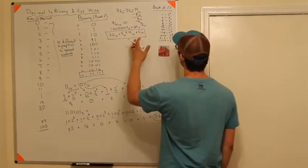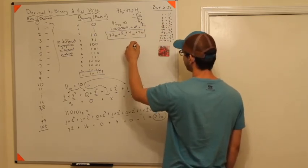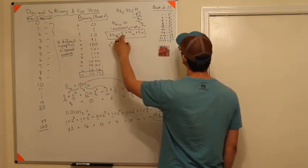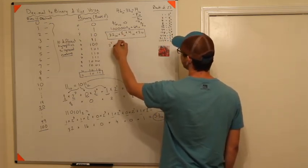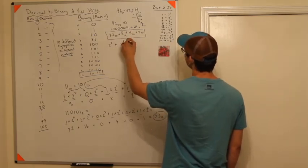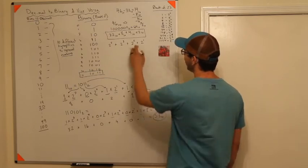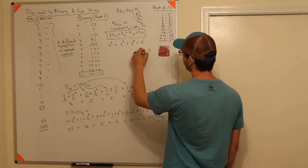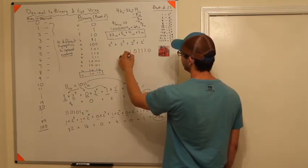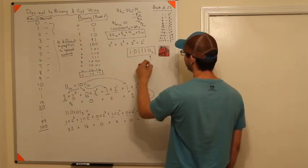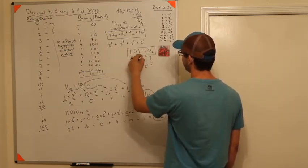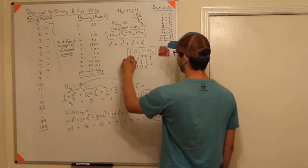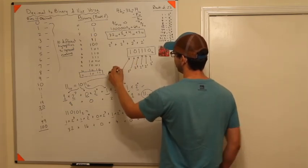Now I write down all the powers: 2 to the 5, plus 2 to the 3, plus 2 squared, plus 2 to the 1. Those become your binary digits. So reading from bit position 5 down to 0: 1 at position 5, 0 at position 4, 1 at position 3, 1 at position 2, 1 at position 1, 0 at position 0. So 46 base 10 is 101110 base 2.